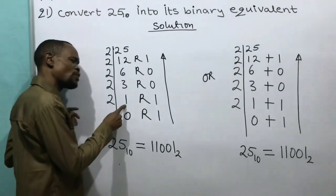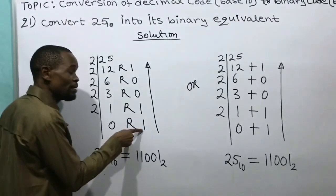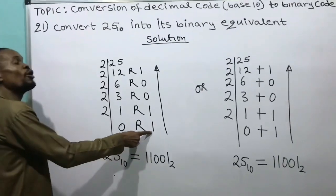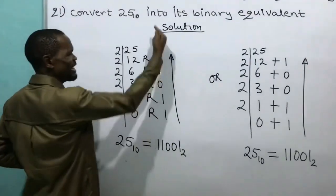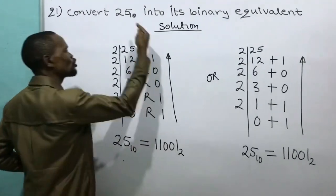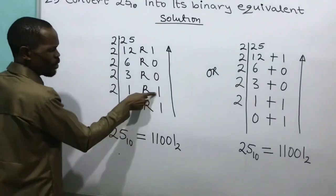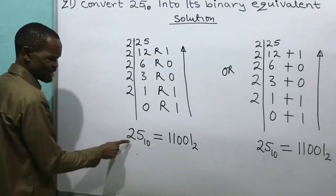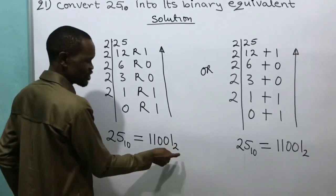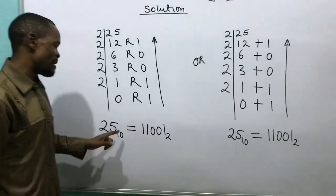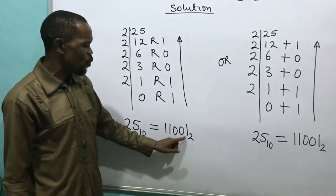So 2 divided by 1 gives me 0 — nobody goes with anything — and we keep the word 1 aside. The direction of reading the remainders is from bottom upward, following the arrow. Taking it upward: 1, 1, 0, 0, 1. That means my 25 base 10 equals 11001 base 2.